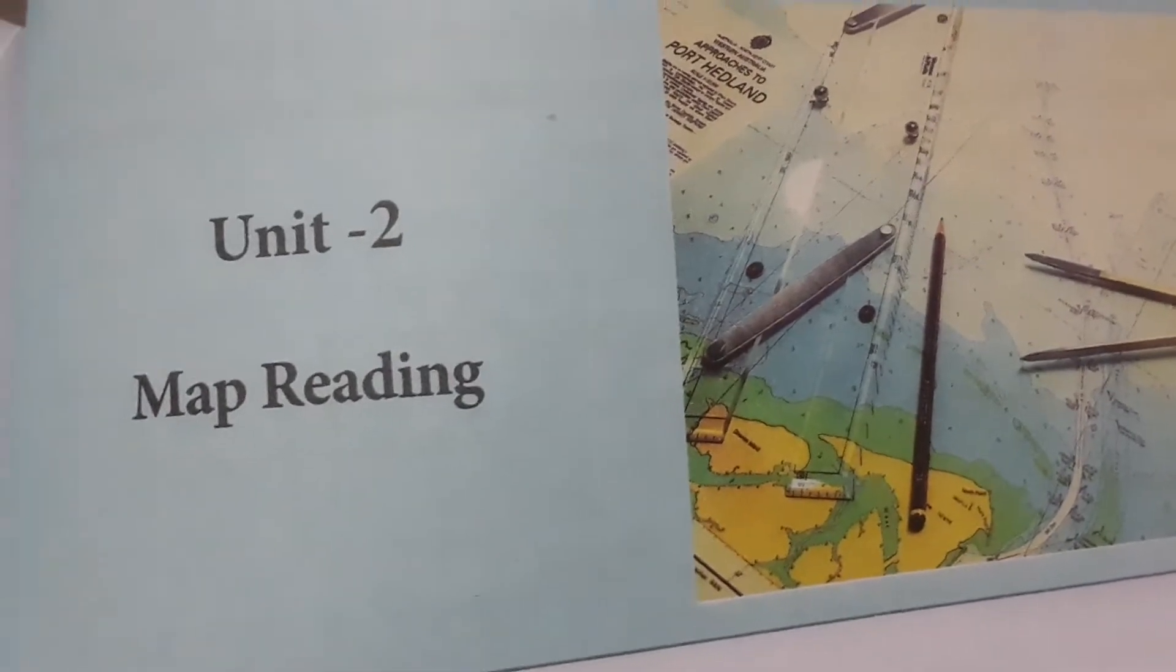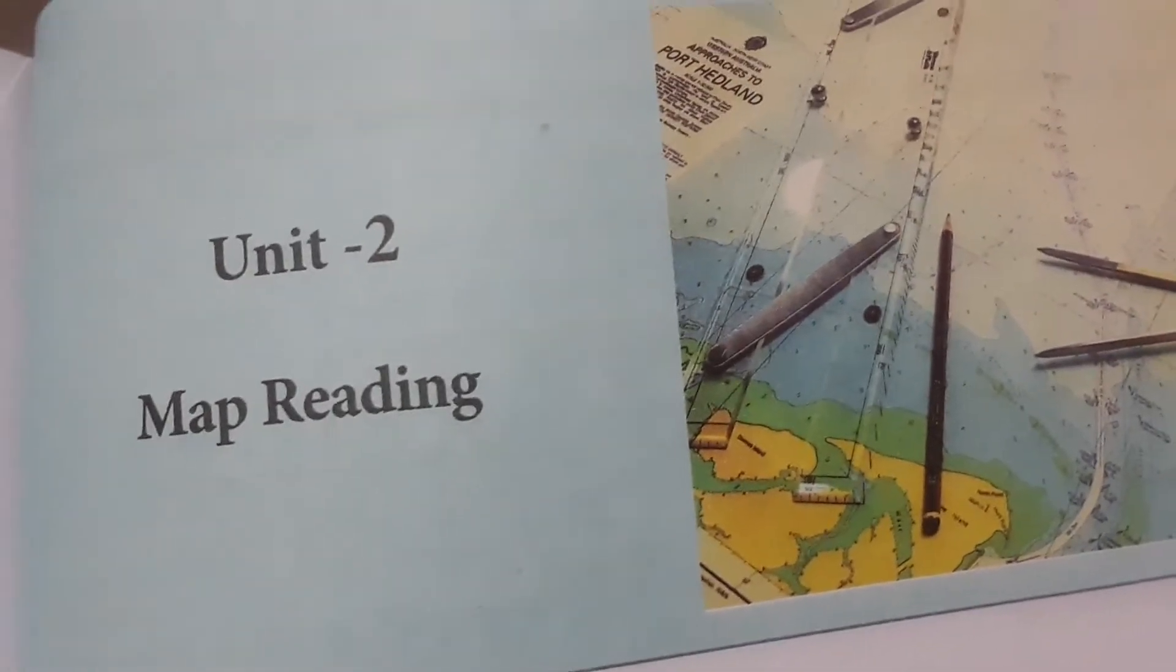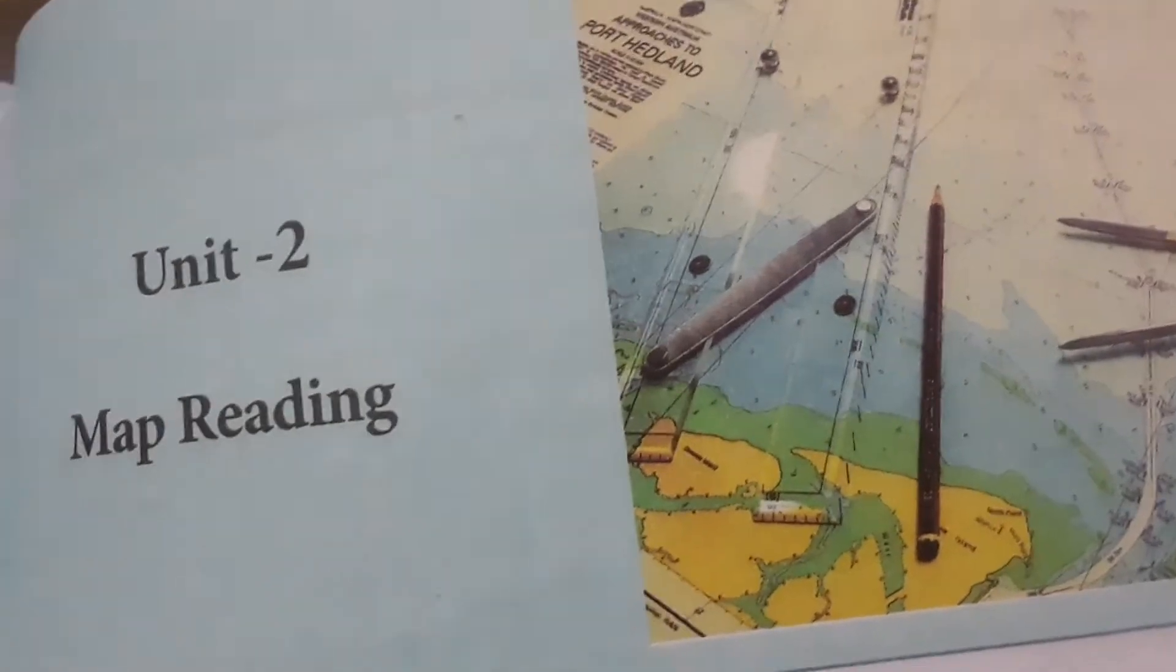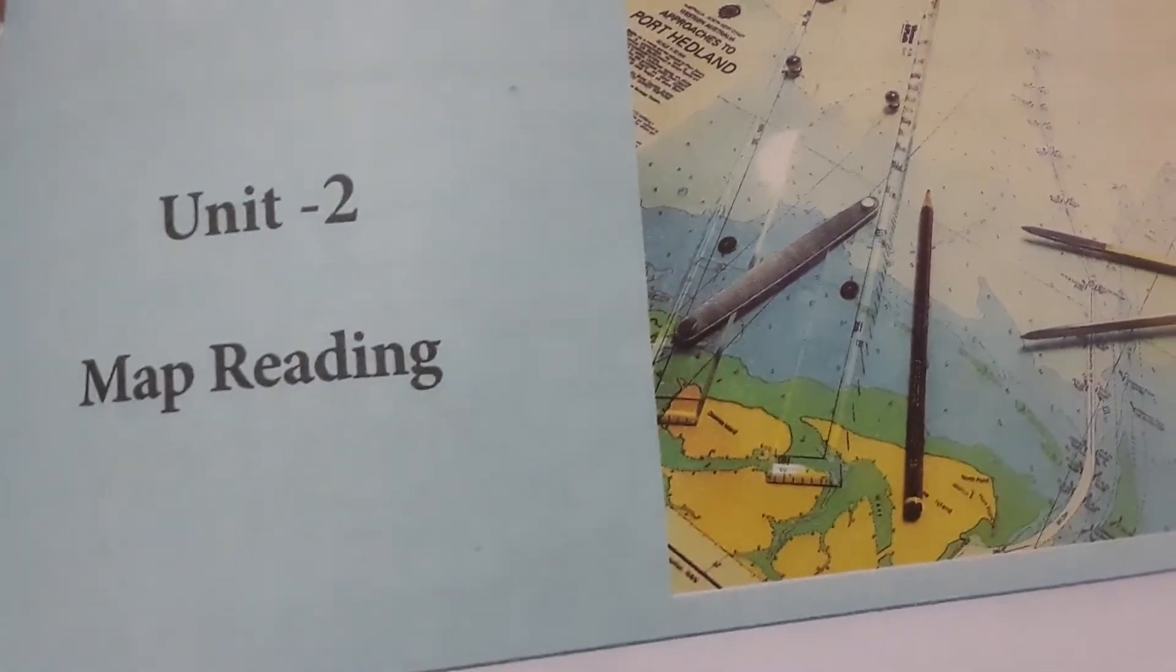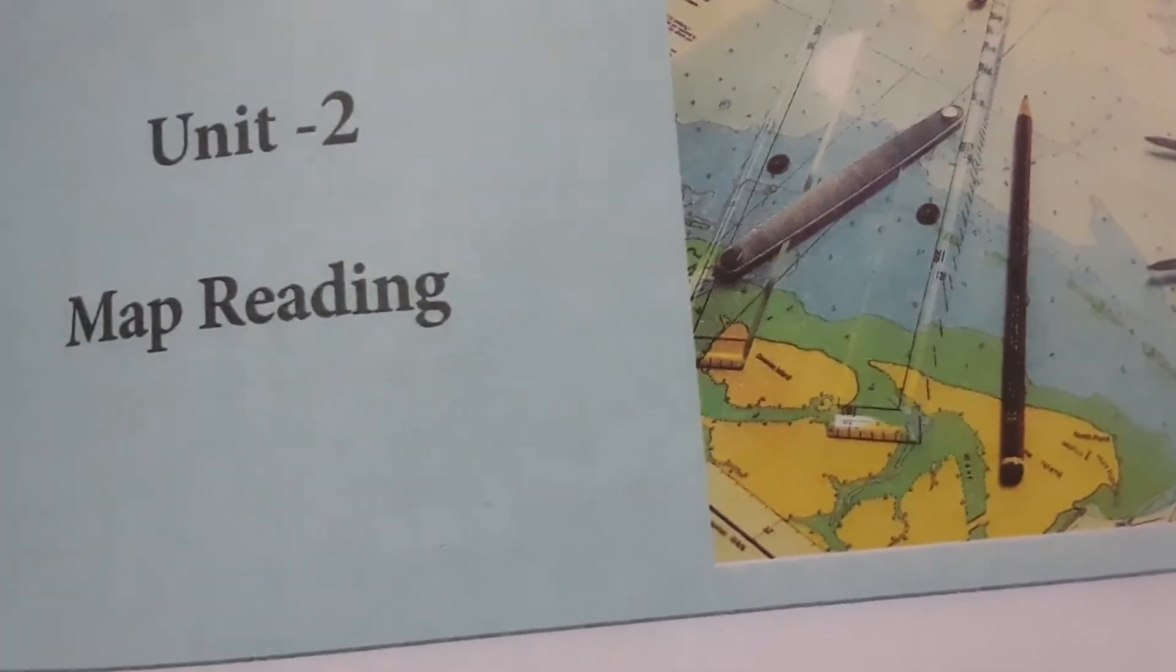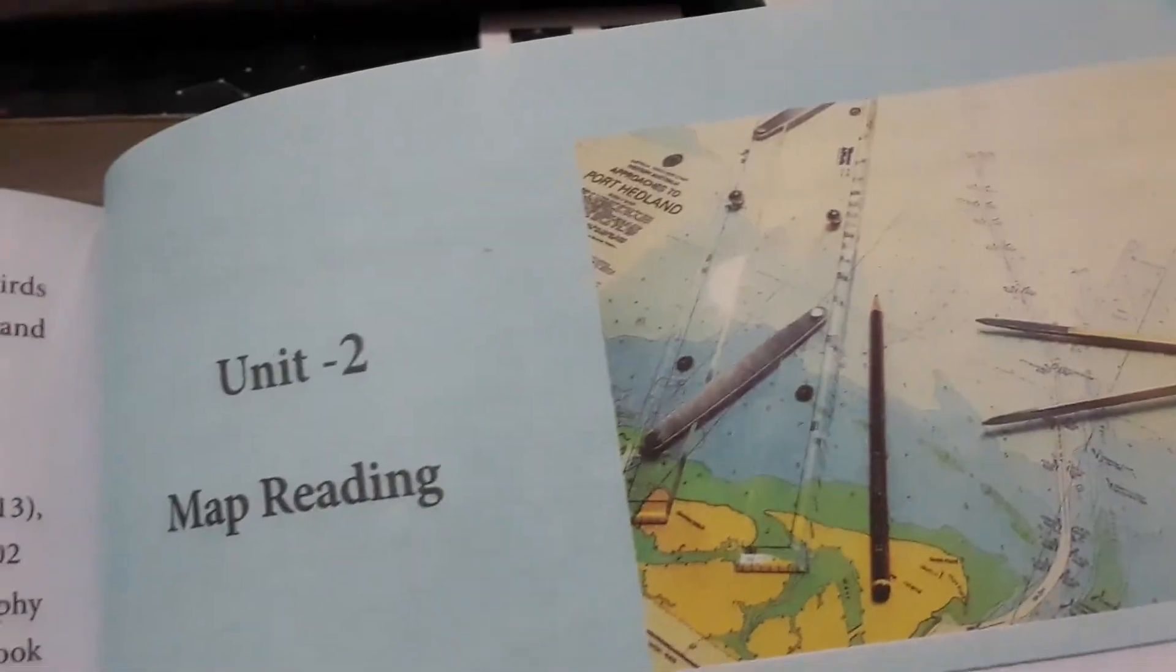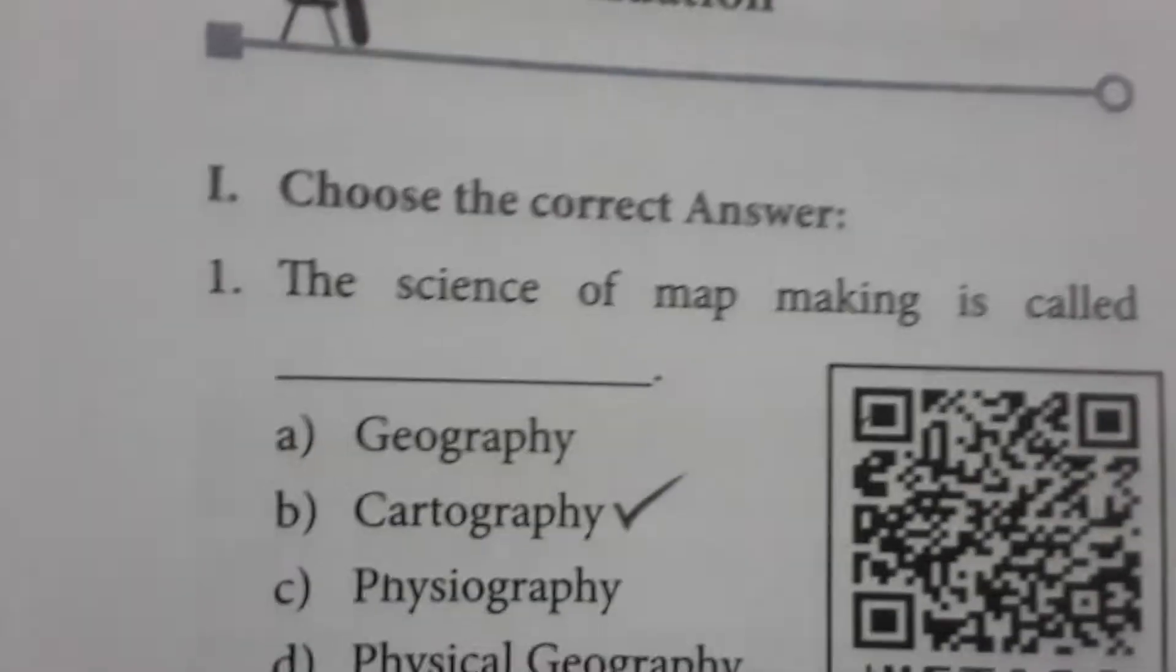Welcome to Satish Science Teacher YouTube channel. Today we are going to see the book pack evaluations from Term 3, 7th standard Social Science. Under geography, the unit is Map Reading. In this lesson we are going to see what is a map, what are the types of maps, what are the uses of maps, and some interesting information.